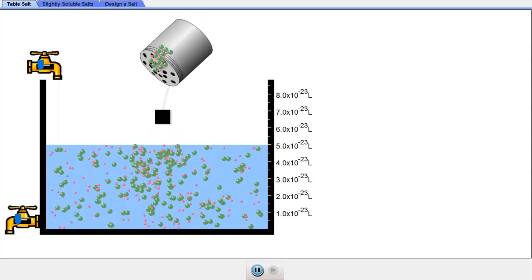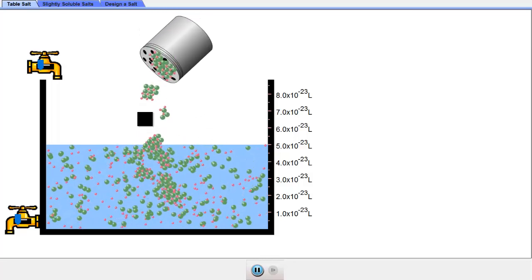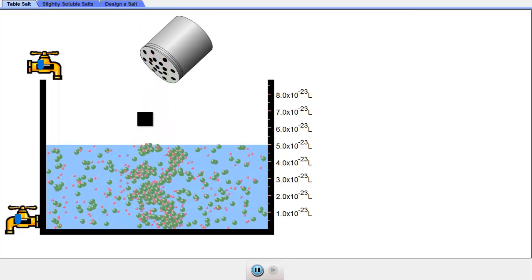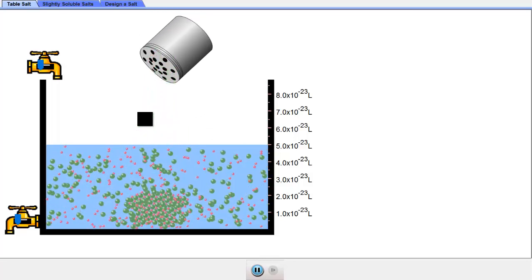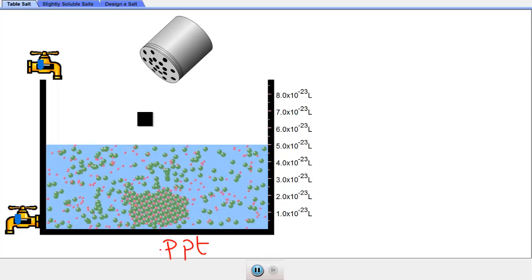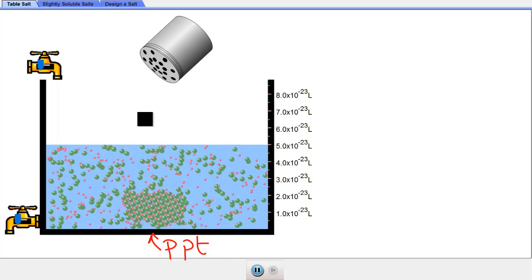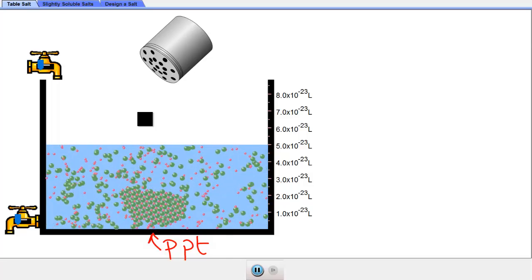So as I keep adding salt, I'll eventually reach the saturation. The solution will become saturated and the salt will begin building up on the bottom, forming a precipitate, right there. Notice that the molecules are still moving, those ions are coming back together as water molecules drop them.